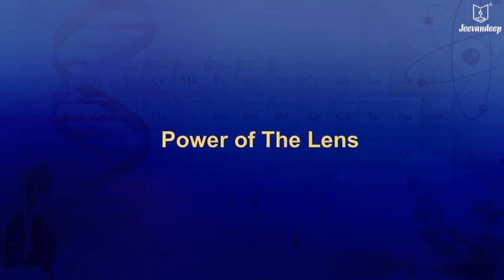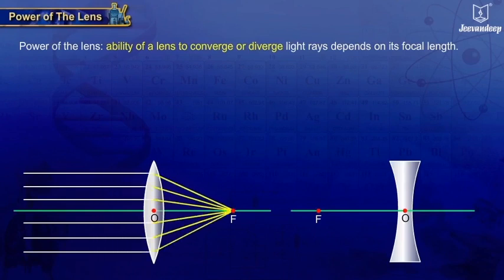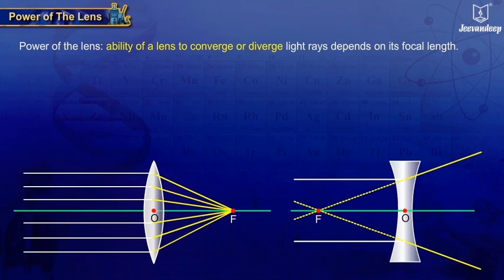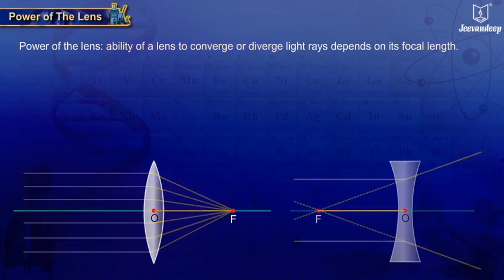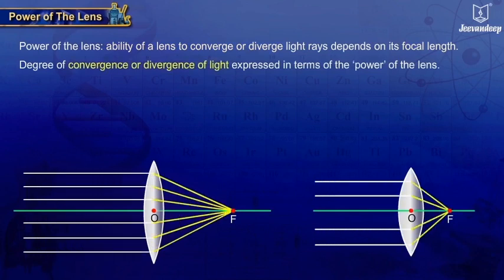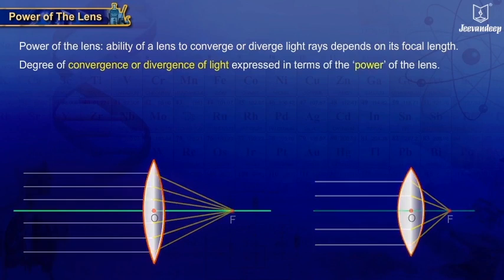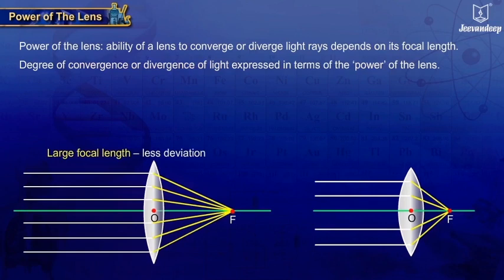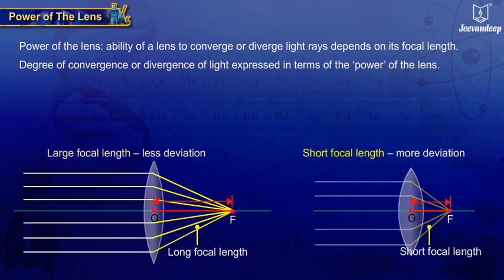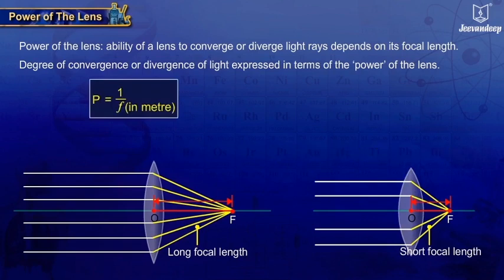The power of the lens: The ability of a lens to converge or diverge light rays depends on its focal length. The degree of convergence or divergence achieved by a lens is expressed in terms of the power of the lens. A lens with a large focal length deviates rays less, while a lens with a short focal length deviates rays more. Thus, the power of a lens is defined as the reciprocal of its focal length in meters: Power = 1 / focal length.